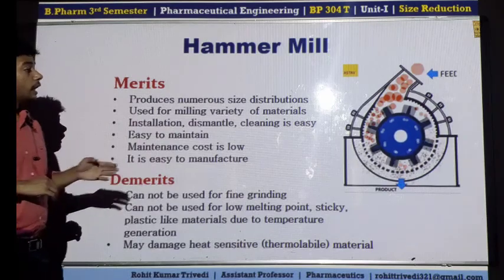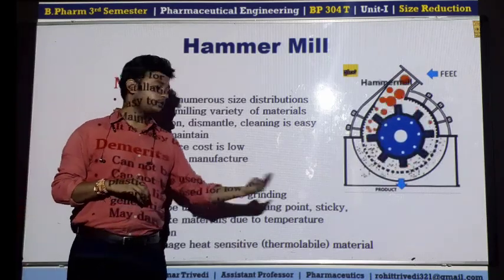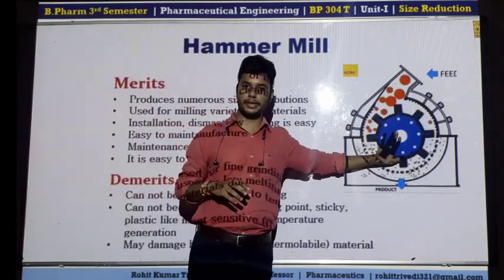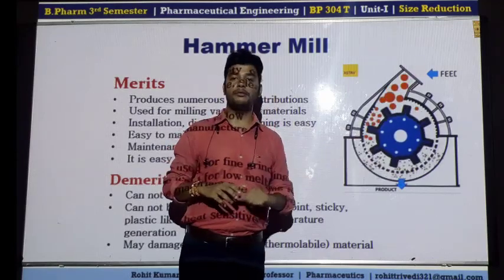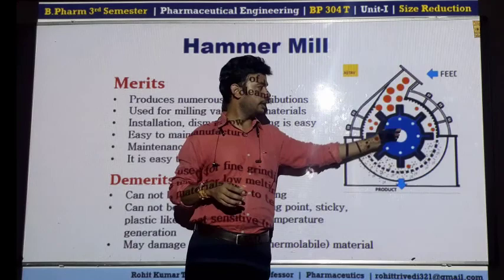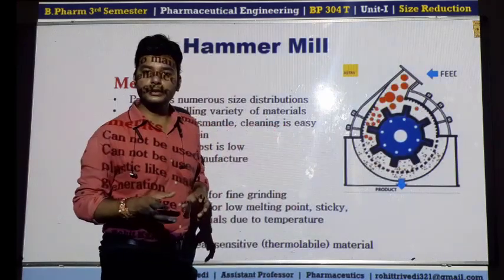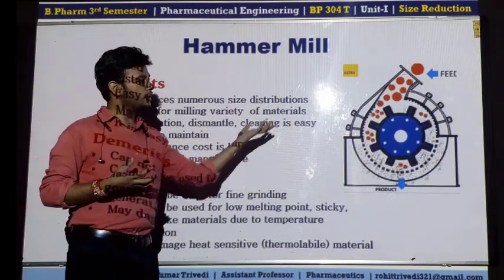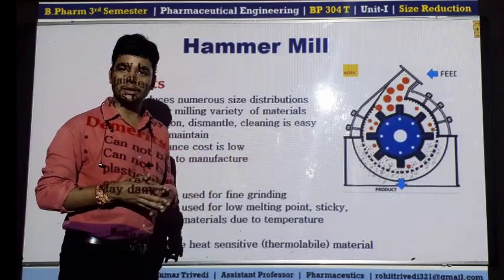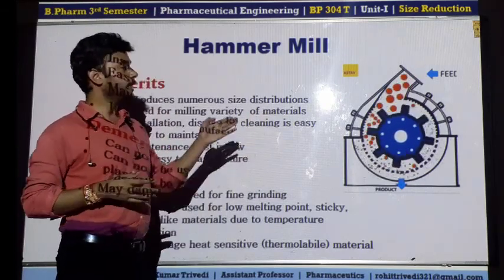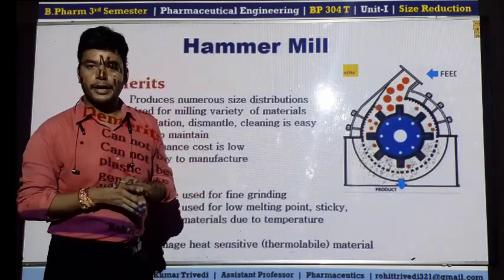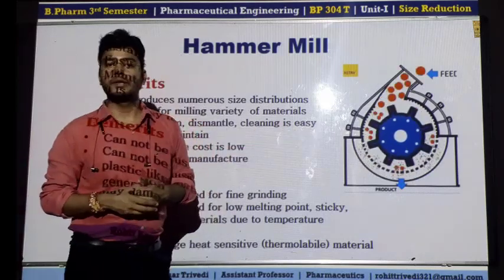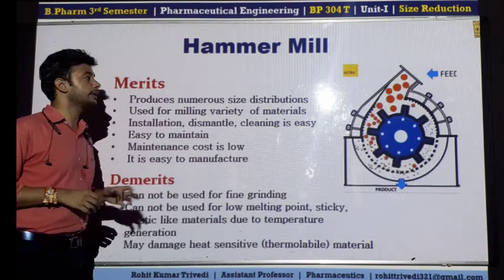Next, the hammer mill cannot be used for low melting point or sticky material. During processing there will be impact — force will be generated and energy will be evolved in the form of heat. The temperature inside the mill during processing will increase, and materials with very low melting point or sticky materials will easily stick to the hammers, the screen, and the machinery. Materials with lower melting point may also get degraded during processing in the hammer mill.